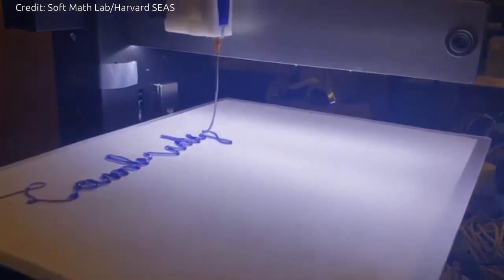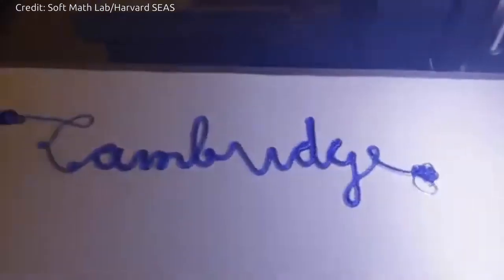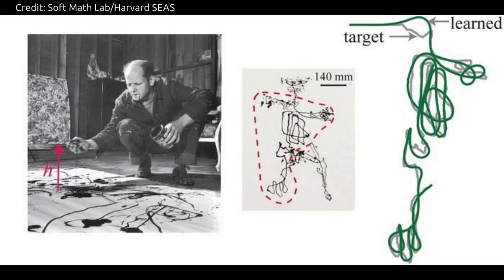We can observe this at home by drizzling honey on a piece of toast. More than two decades ago, the researcher Mahadevan provided a simple physical explanation of this process, and later suggested how Pollock could have intuitively used these ideas to paint from a distance.